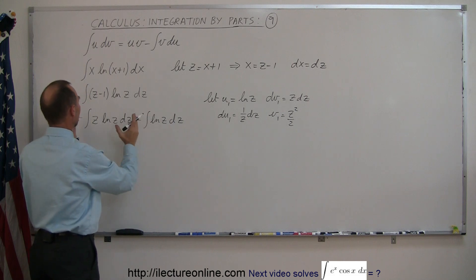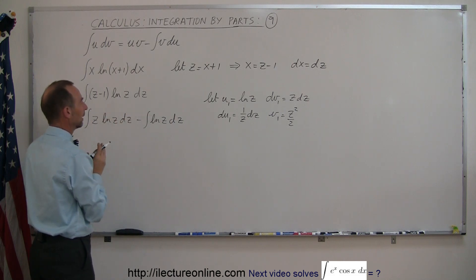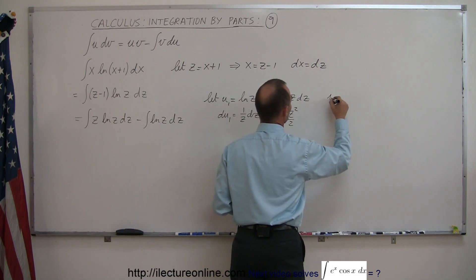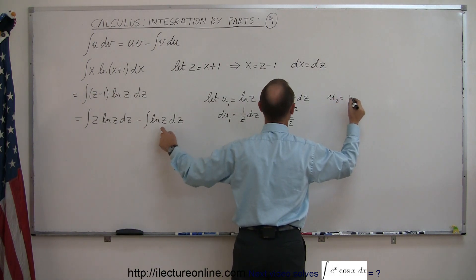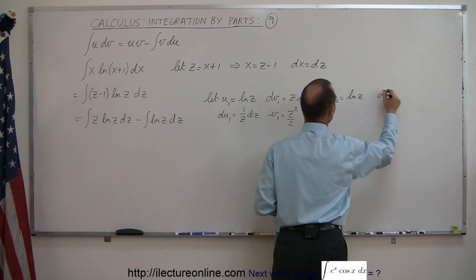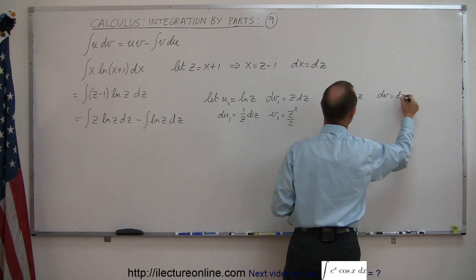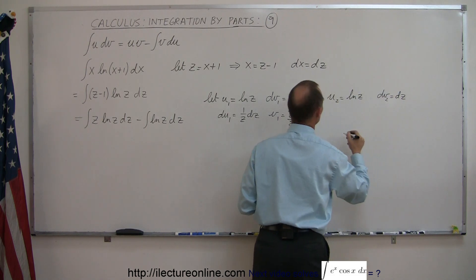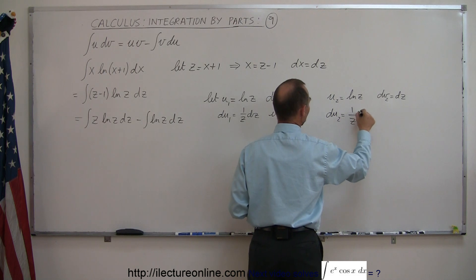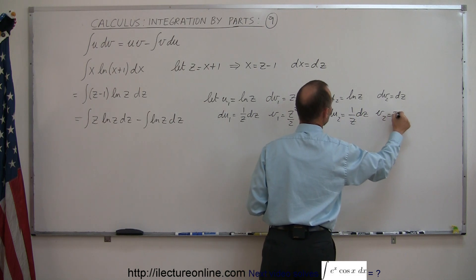For the second integral, let u2 equal the natural log of z, and dv2 equal dz. Then du2 equals 1 over z dz, and v2 equals z.